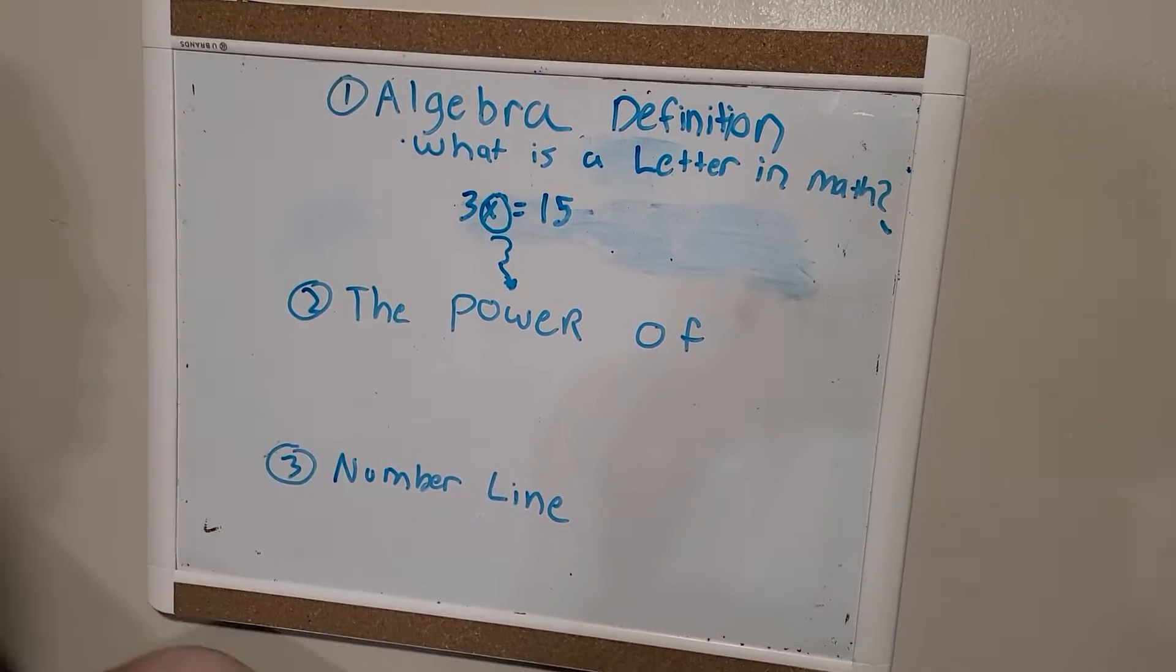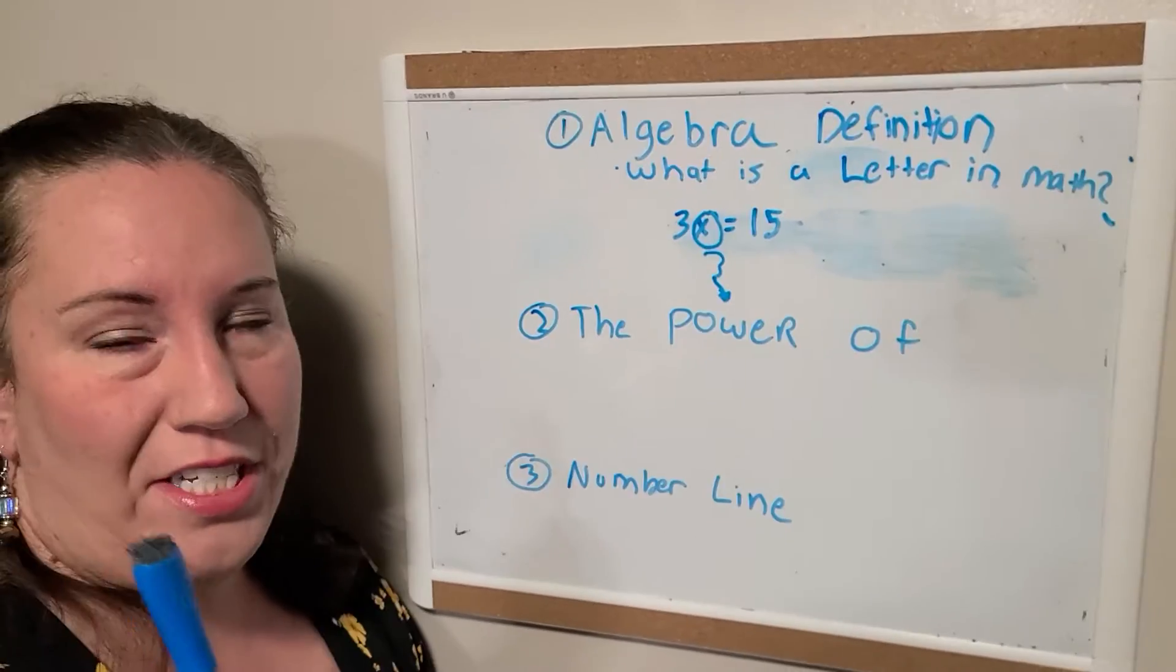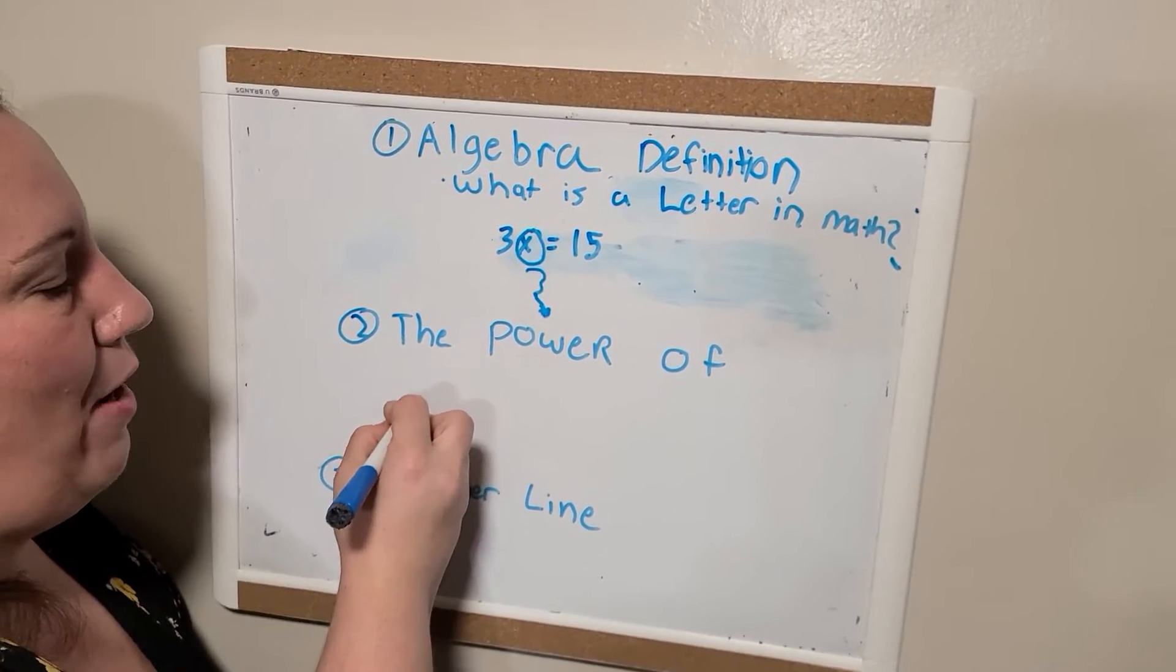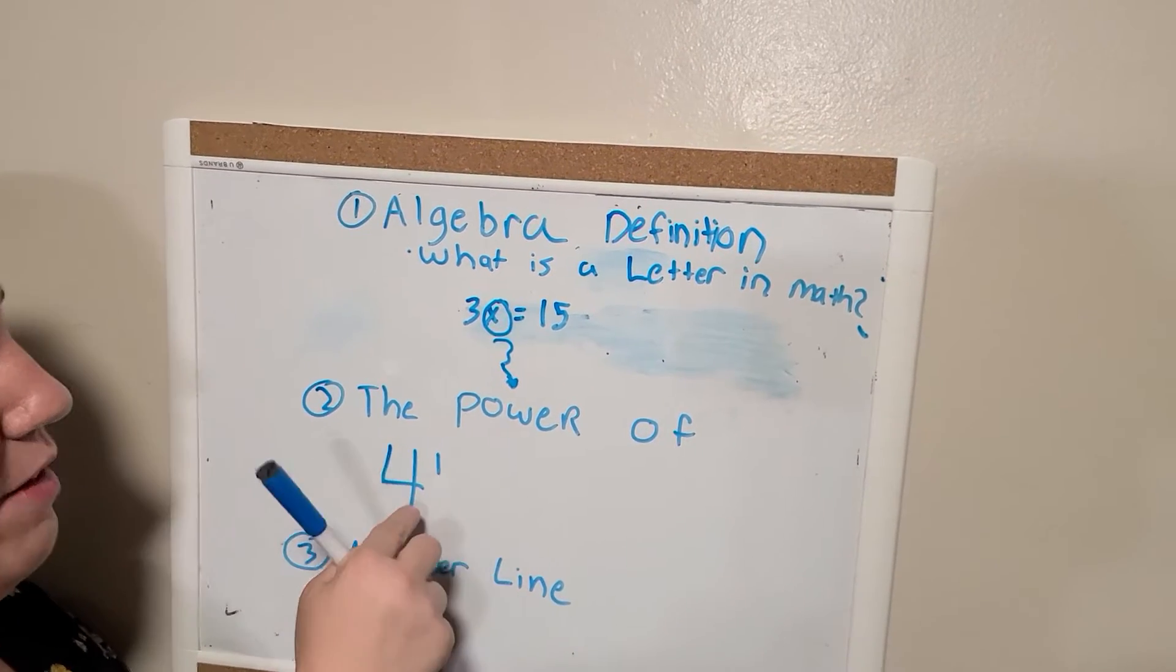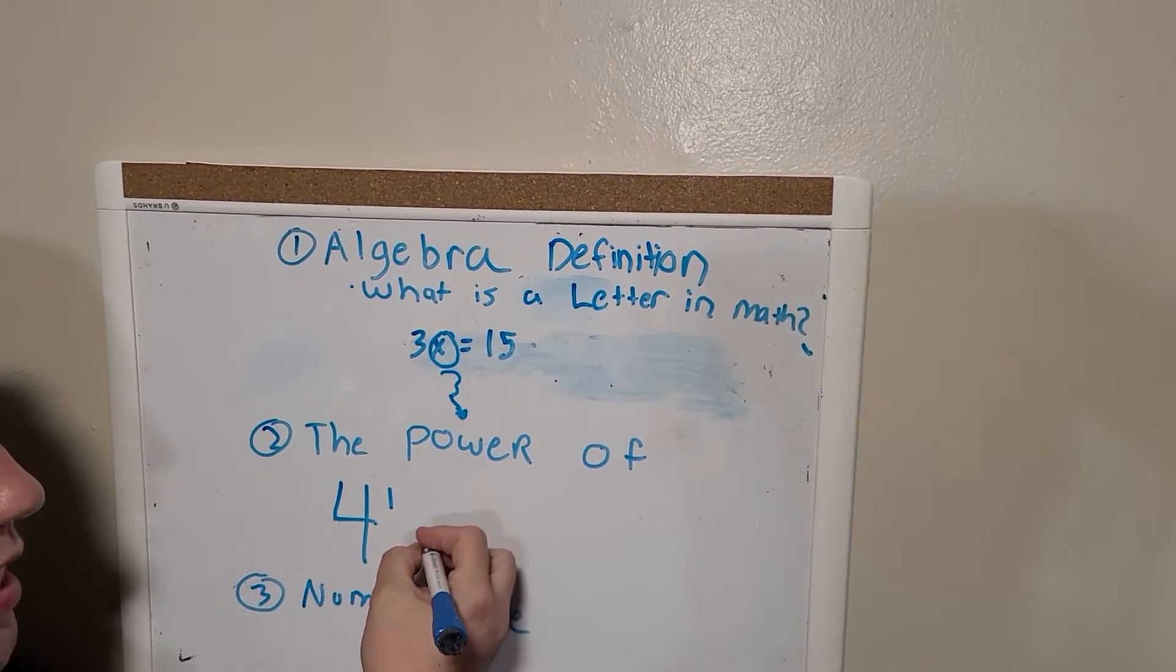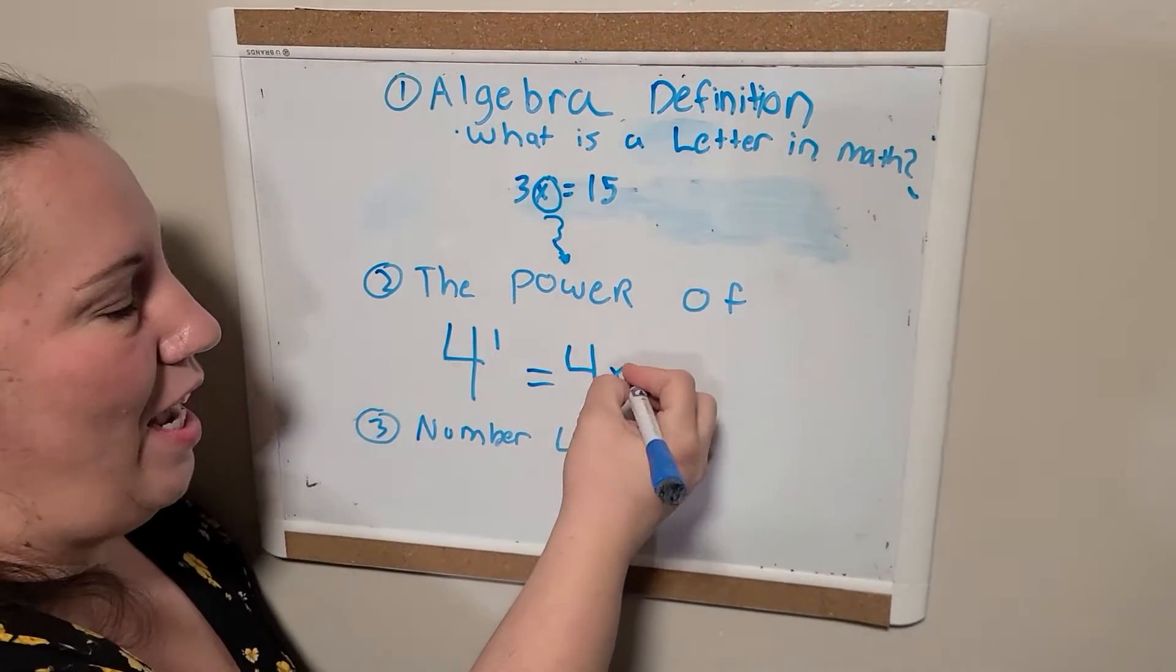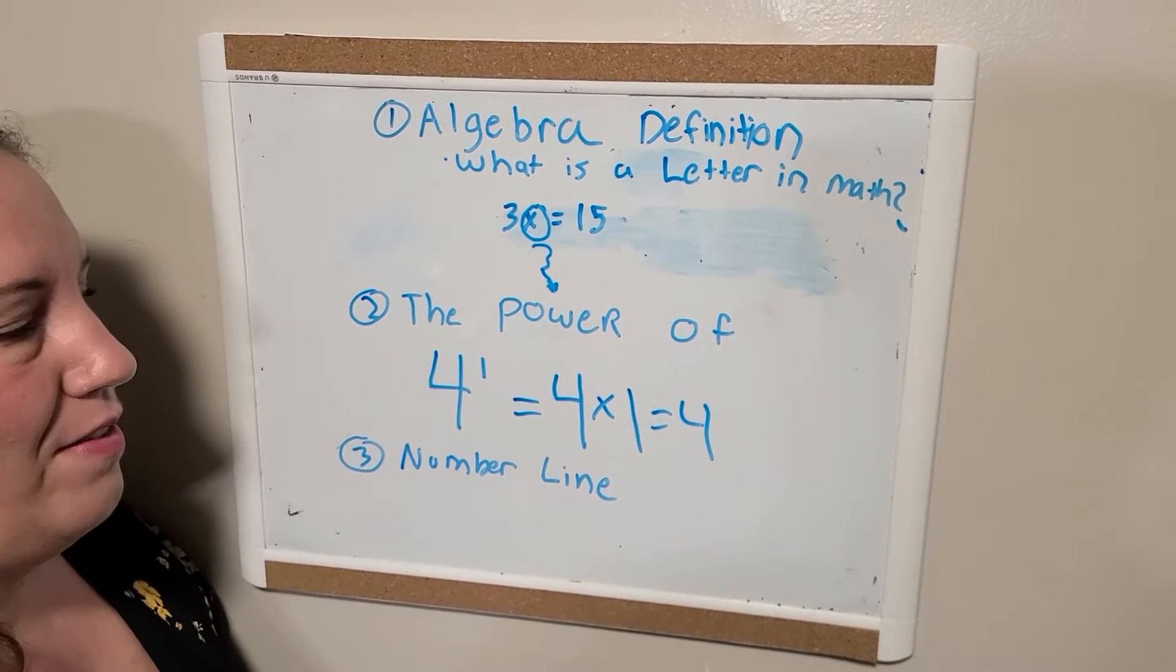And the next thing I'm going to talk about is the power of. And when we talk on the phone tomorrow, I'm going to make sure that you understand this because I'm going to ask you to help me do these problems. So here's the first problem. To the power of. What does to the power of mean? If I have 4 to the power of 1, whenever you have a 1 that's in the top right, it means that's to the power of. And what that means is this is the same thing as 4 times 1 equals 4.